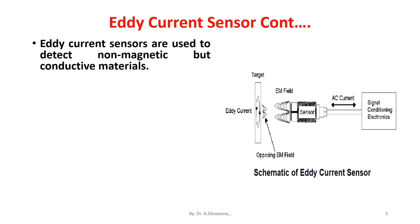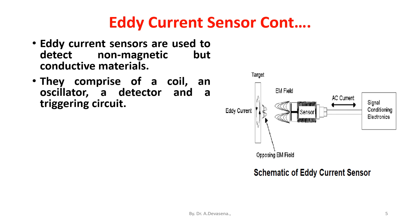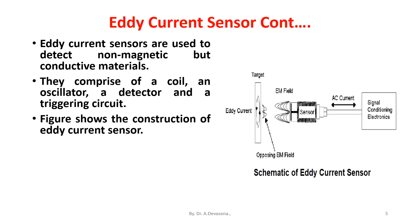They comprise of a coil, an oscillator, a detector, and a triggering circuit. The figure shows the construction of an eddy current sensor.